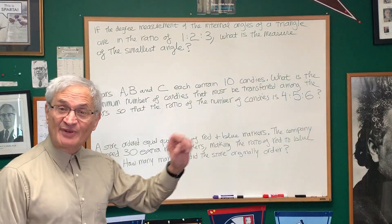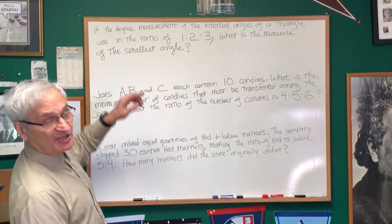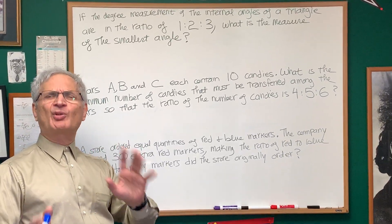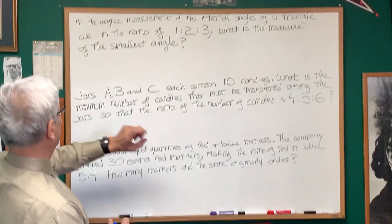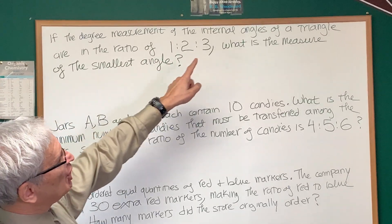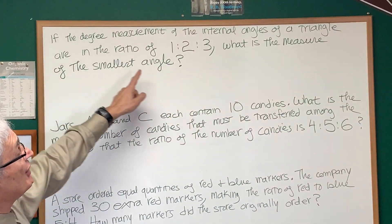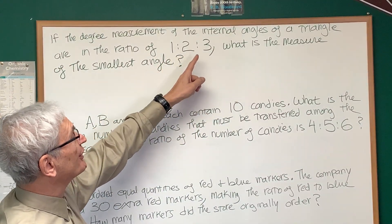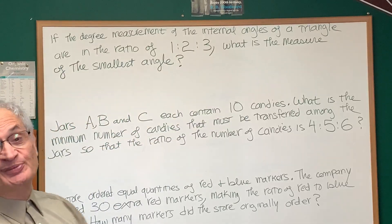Okay, let's do some of these problems here. I'll jump into problems that involve proportions, constants of proportionality. If the degree measurement of the internal angles of a triangle are in the ratio of 1 to 2 to 3, what is the measure of the smallest angle?